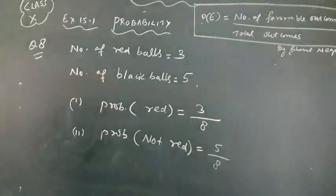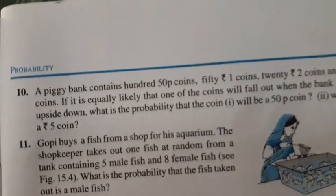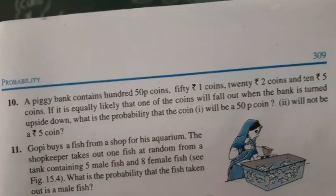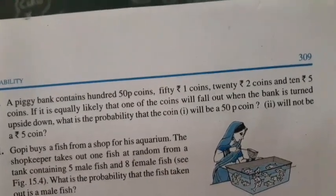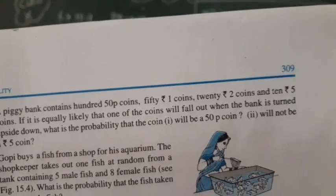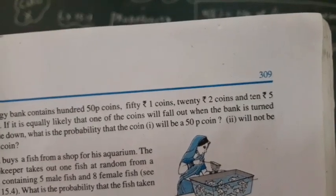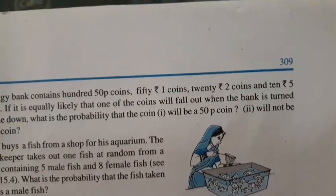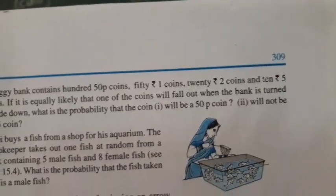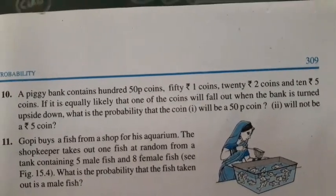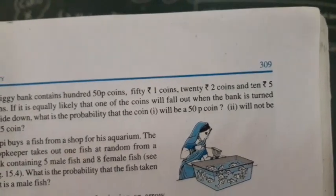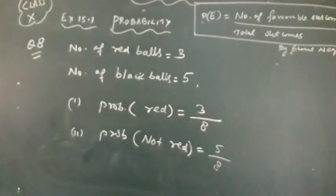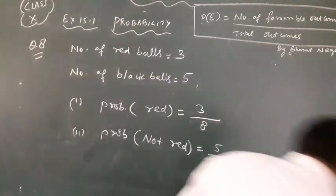Question number 10. This is the question. A bank contains 100 50 paise coins, 50 1 rupee coins, 20 2 rupees coins and 10 5 rupees coins. If it is equally likely that one of the coins will fall out when the bank is turned upside down, what is the probability the coin will be 50 paise coin, will not be 5 rupees coin. Now we will do question number 10. This is a similar question like this but we will do on the board.